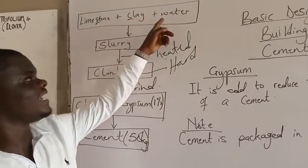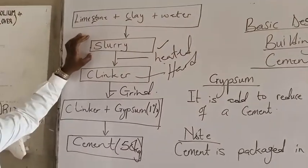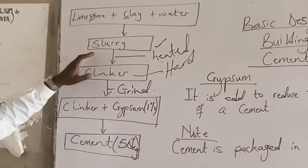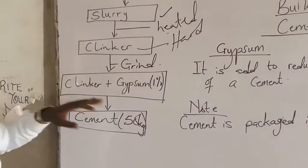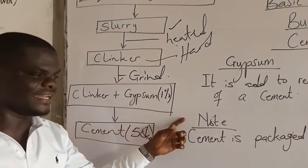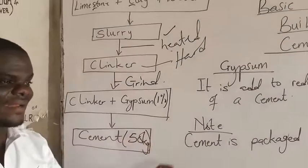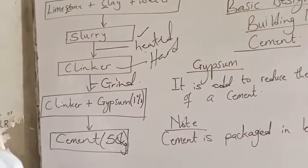Limestone, clay and water are mixed together to obtain a substance called slurry. The slurry is heated to get a substance called clinker. The clinker is ground, and 1% of gypsum is added to reduce the rate of hardening. Then after that, the cement is packed into bags of 50 kg.